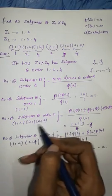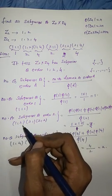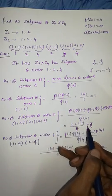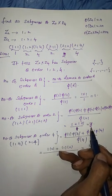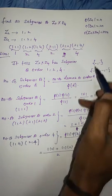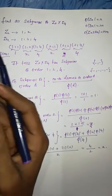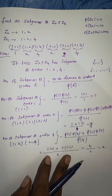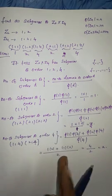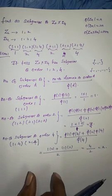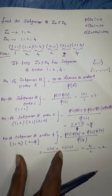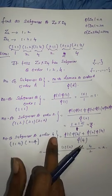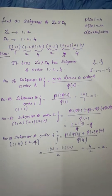In an exam, they might ask for the number of subgroups of order 2 in Z2 cross Z4, and the answer is 3. They might also ask for subgroups of order 4, and the answer is 2. This means we can find 2 different subgroups in Z2 cross Z4 where each subgroup has 4 elements. Note that order of an element is different from order of a group, as covered in video 2.